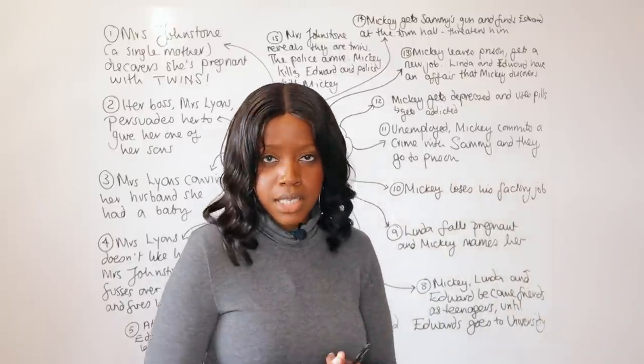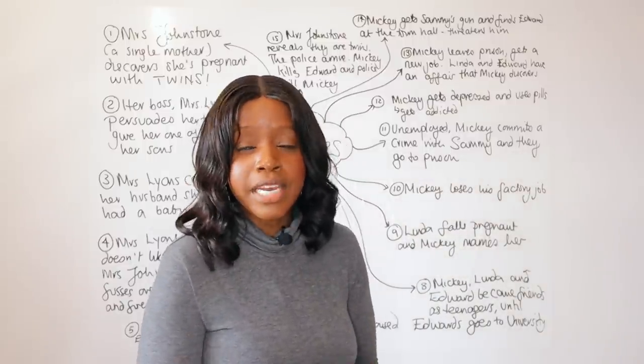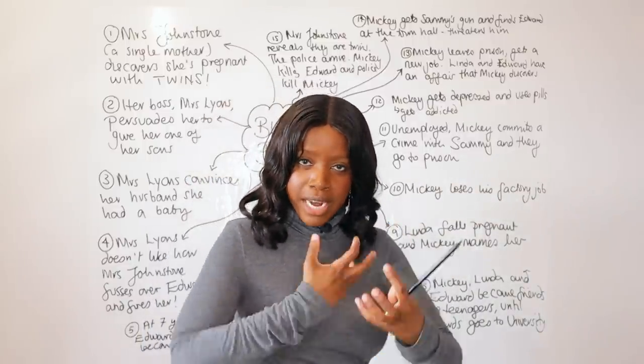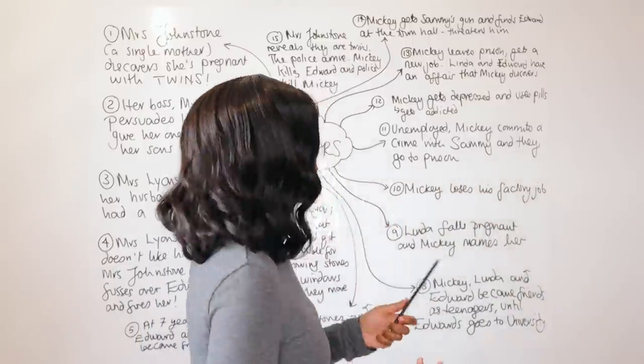Unemployed, Mickey is approached by his older brother Sammy, now a criminal, who convinces him to commit a quick crime for money. Mickey agrees, but they are caught and both go to prison — continuing the cycle of poverty among the working classes and showing again how the law treats Mickey harshly. In jail Mickey becomes depressed, begins using pills, and becomes addicted. Even after release, Linda finds there is an emotional disconnect between them, while Edward still lives in the same city and maintains a connection with Linda.